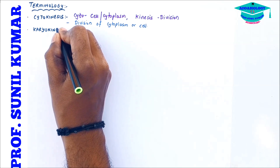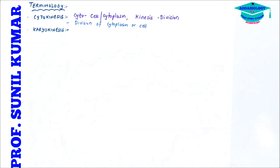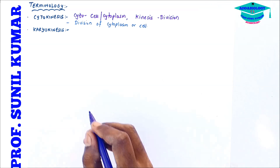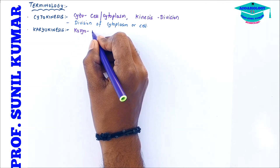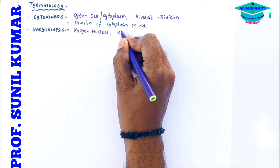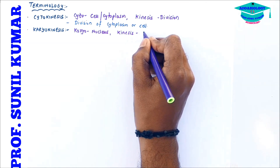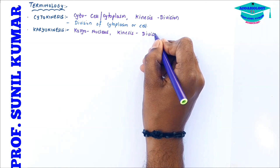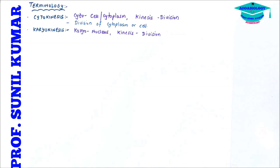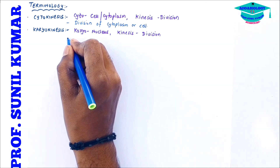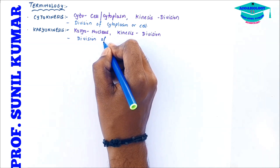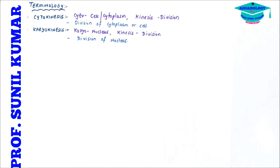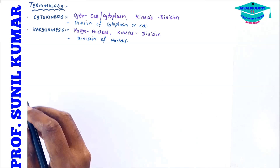The next important term is karyokinesis. 'Karyo' means nucleus, and 'kinesis' means division. So karyokinesis is defined as the division of the nucleus. These are key terms involved in cell division.